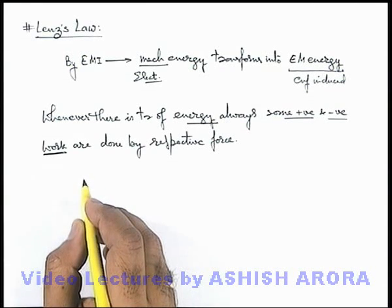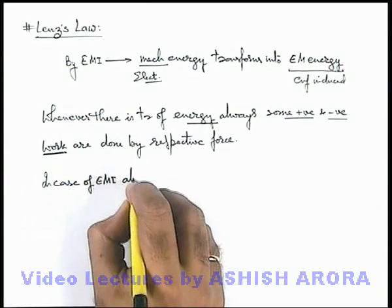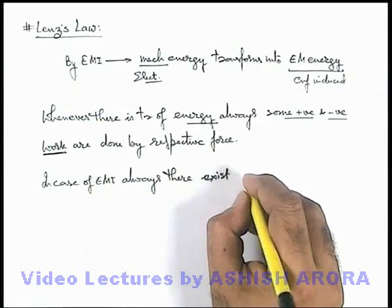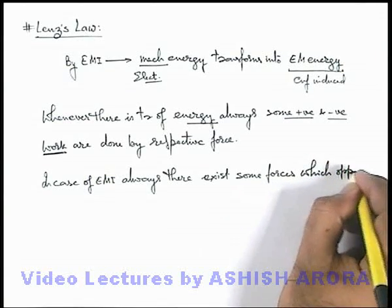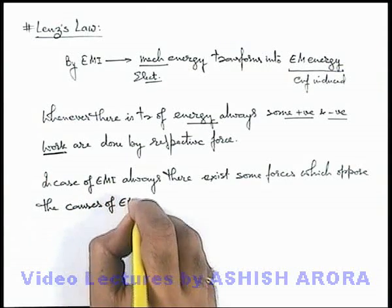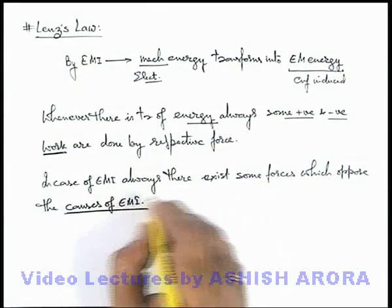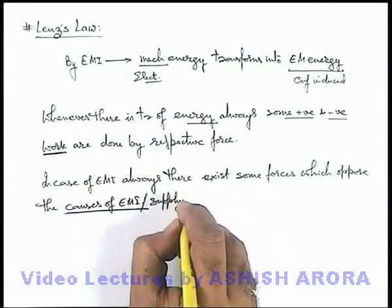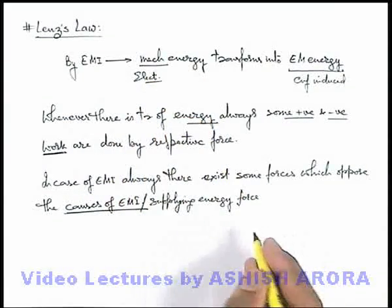That means in case of electromagnetic induction, always there exist some force or forces which oppose the causes of electromagnetic induction, or the causes means the forces which are causing the relative motion or which are supplying energy. Causes of electromagnetic induction, supplying energy forces. These may be mechanical or electrical forces.